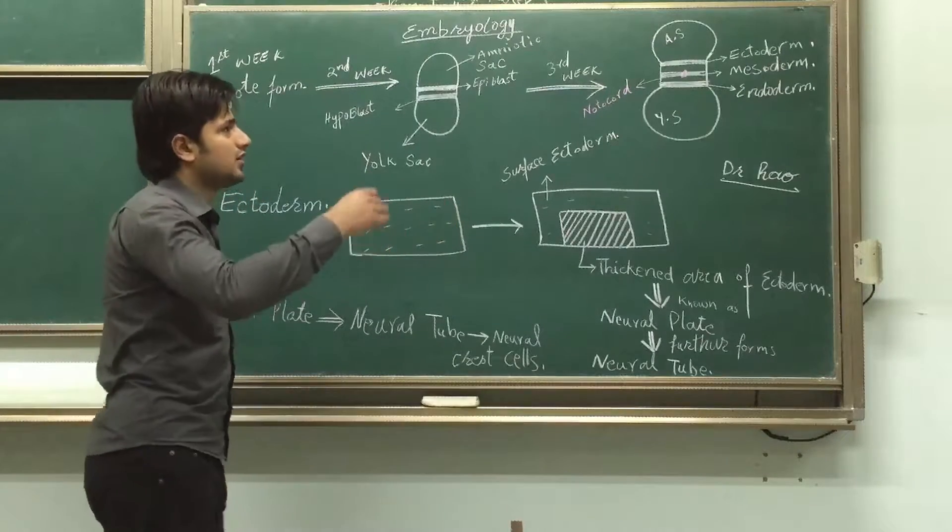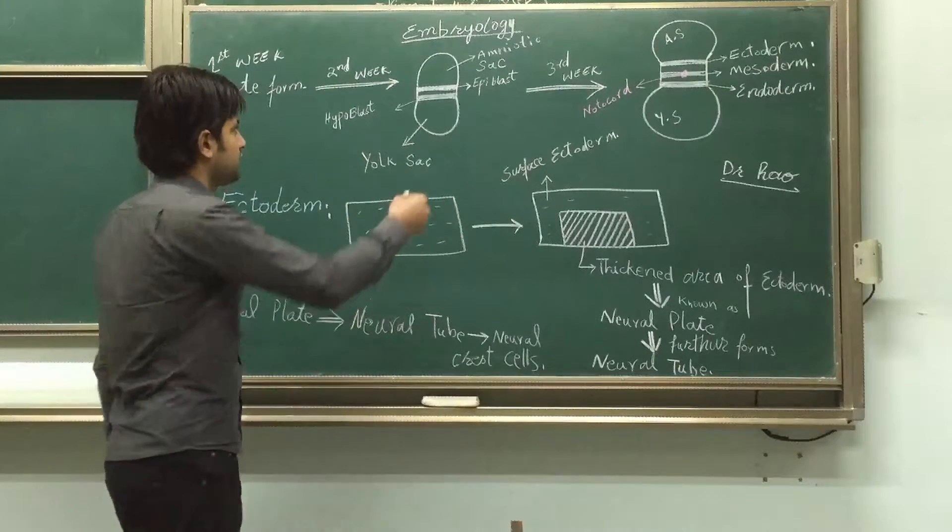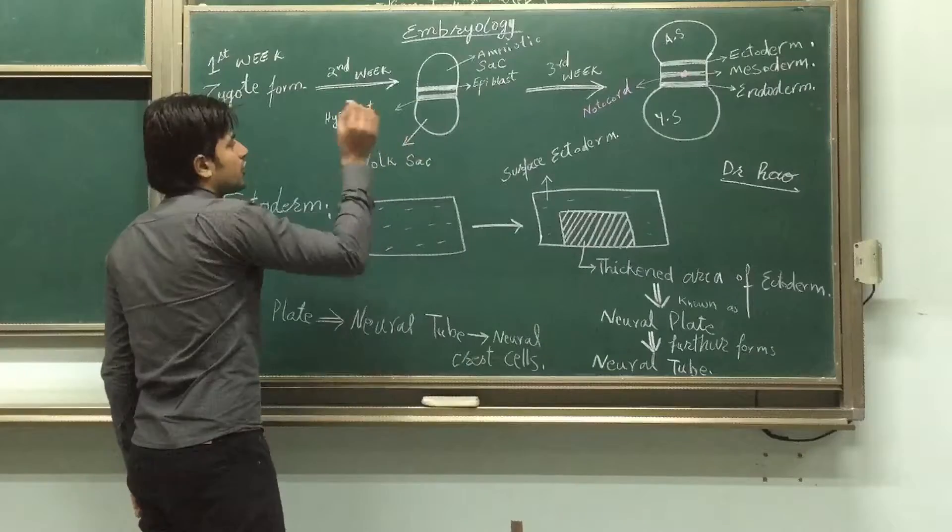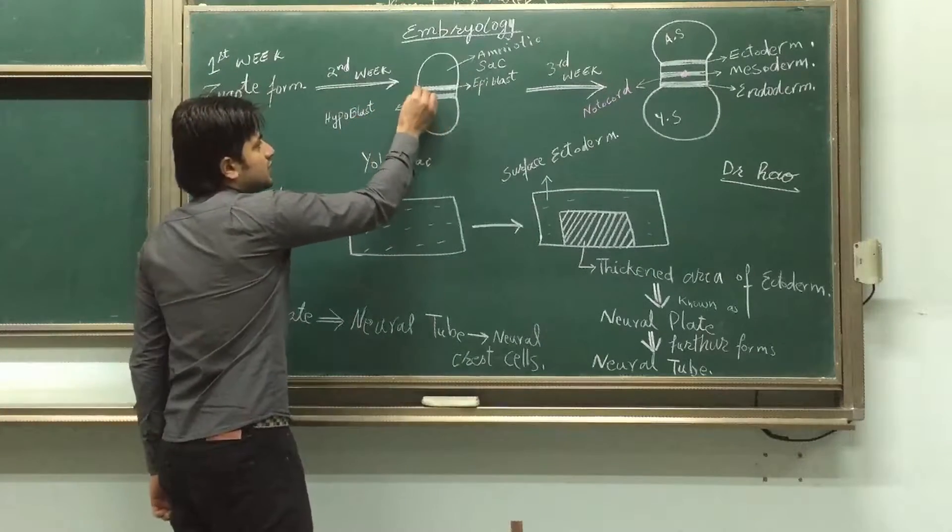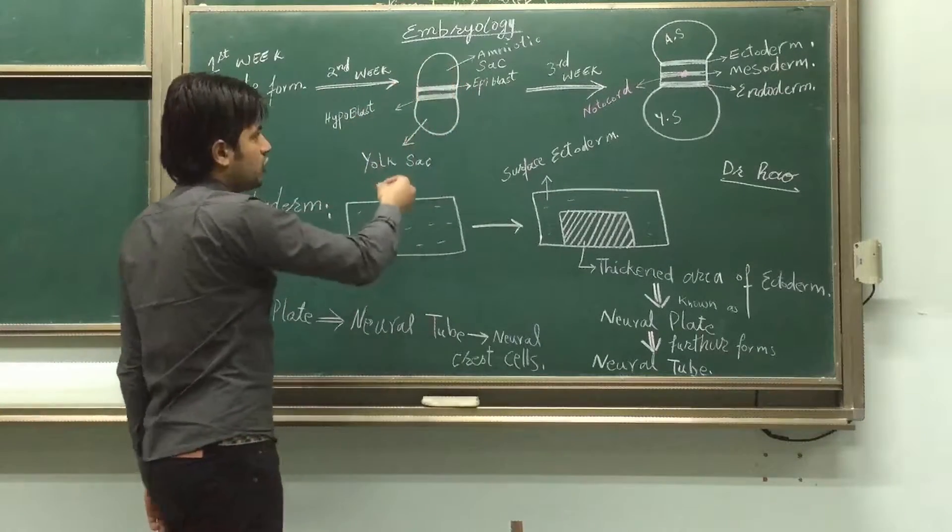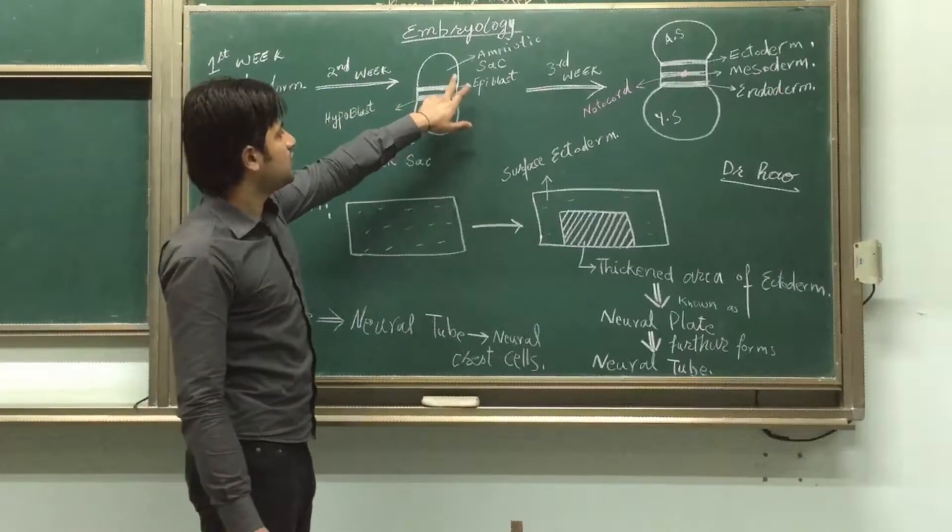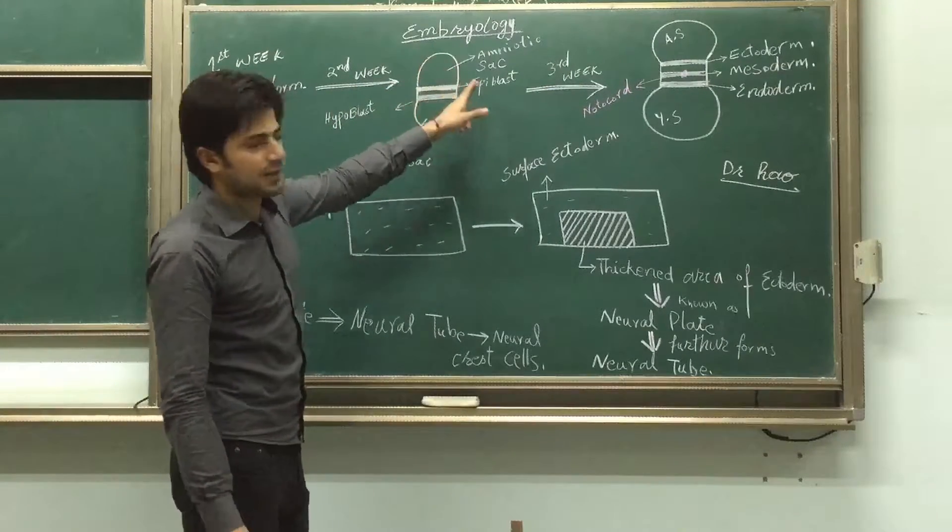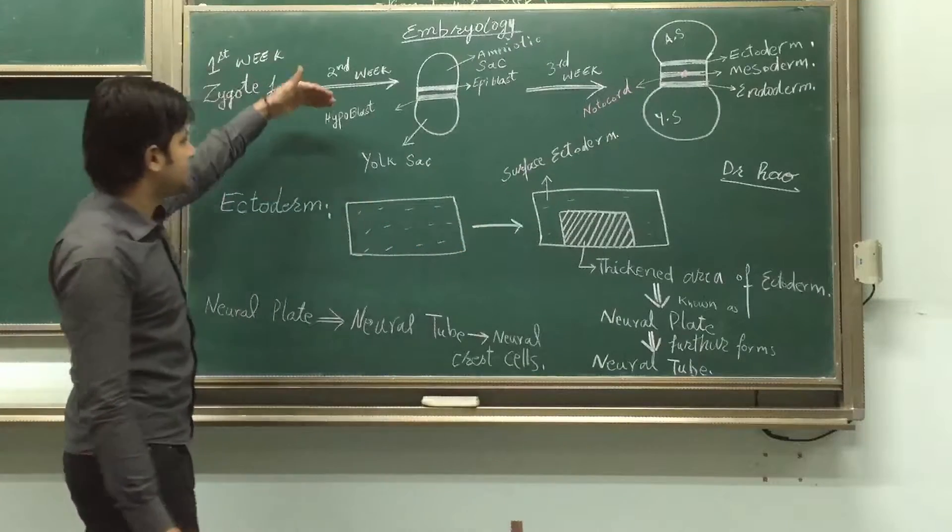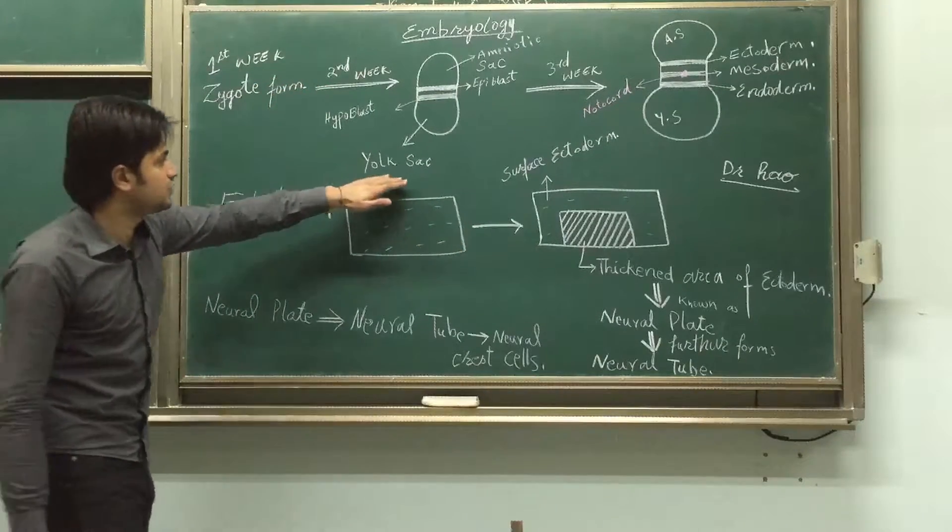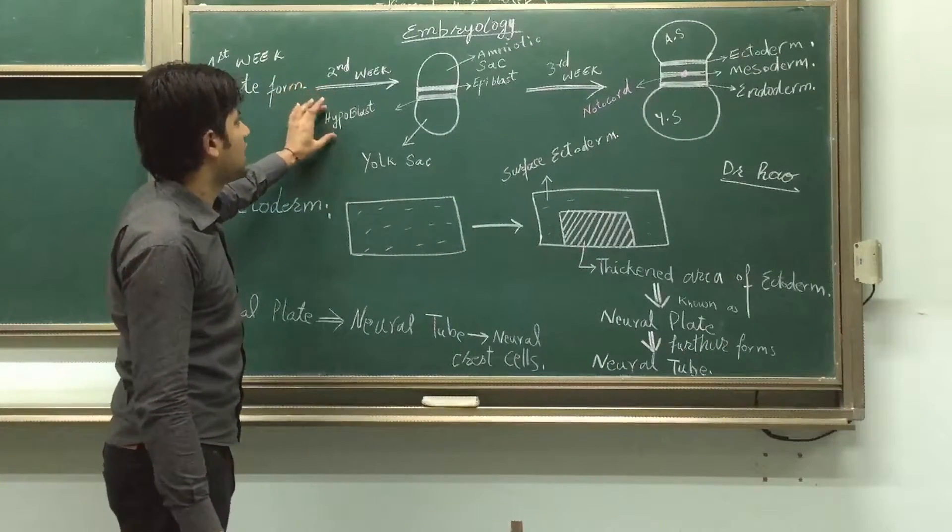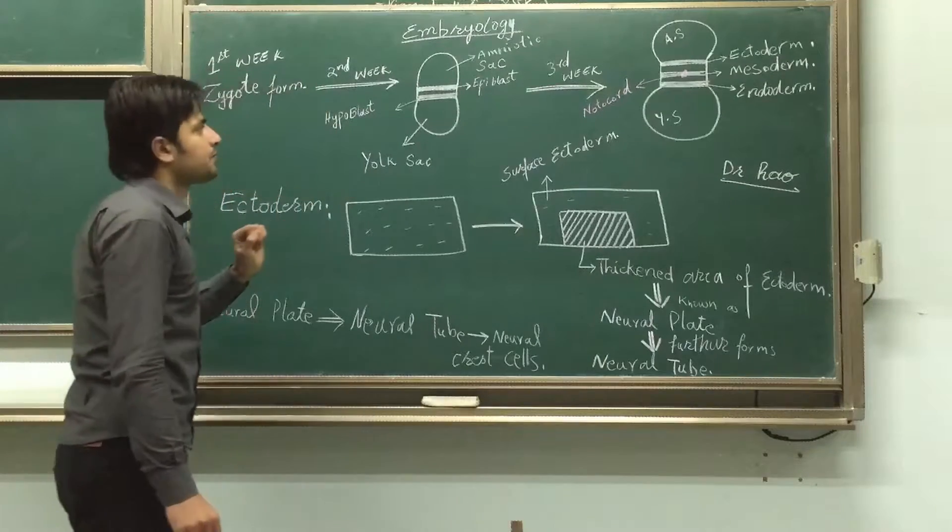This one has yolk inside it and is going to form the full embryo from this yolk. There are two layers between the amniotic sac and yolk sac which divide them. The upper one from the yolk sac is epiblast, and the other one that is downward near the yolk sac is known as hypoblast.